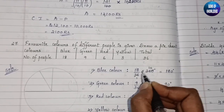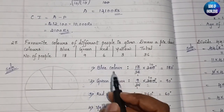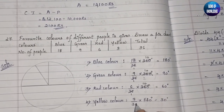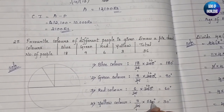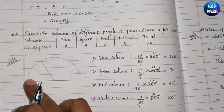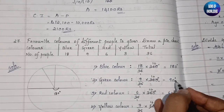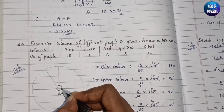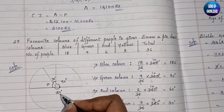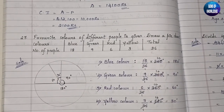Calculating degrees: Blue = 18/36 × 360 = 180°. Green = 9/36 × 360 = 90°. Red = 6/36 × 360 = 60°. Yellow = 3/36 × 360 = 30°. So in the pie chart: 180° (half the circle) for blue, 90° (a right angle) for green, 60° for red, and 30° for yellow.